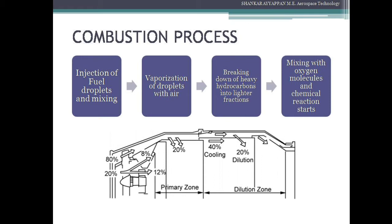In the combustion process, the air entering the combustor is divided into three categories. The first is the primary zone, where 20 percent of the main flow enters. This is where the real combustion occurs — the fuel droplets mix with the air and the temperature produced by the combustion is very high. Then we have the secondary zone, where the incomplete combustion products are mixed with secondary air and complete combustion occurs. In the tertiary zone, 60 percent of the main flow air enters, and the temperature of the gases is reduced by means of this air. The tertiary zone acts as a cooling zone, and the reduced temperature gases then enter the turbine.